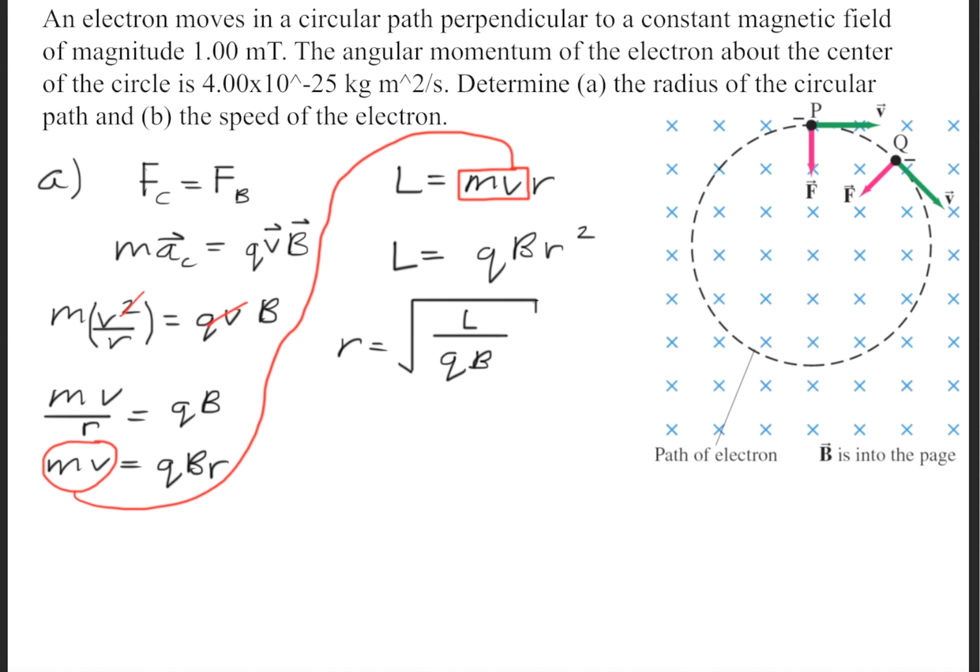Now we can go ahead and solve for r, and we can go ahead and plug in the numbers that were given. Remember that the charge of an electron is 1.6 times 10 to the negative 19th coulombs. And we'll get the radius is 0.05 meters.